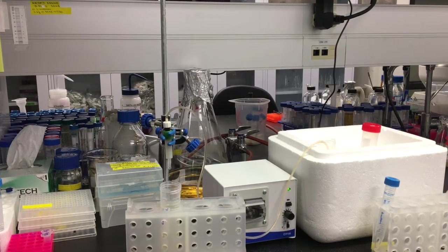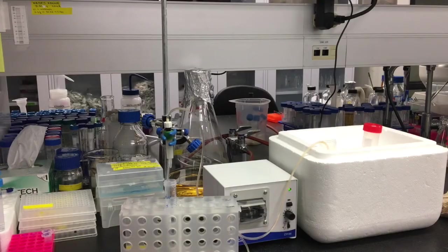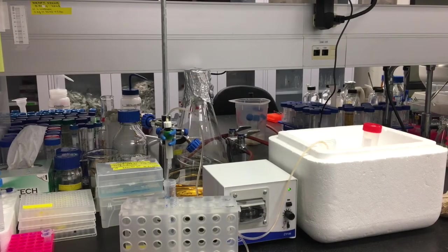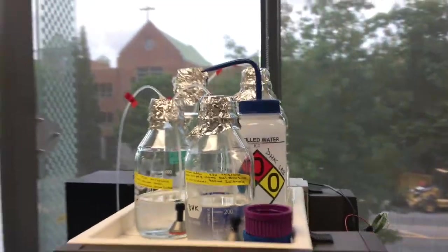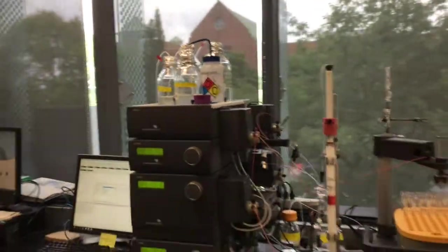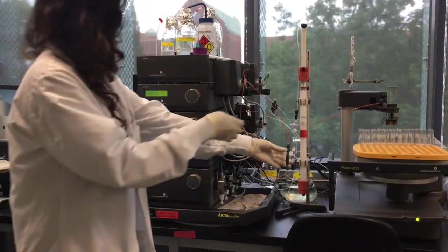After passing the cleared soluble lysate through the column, you can also run a wash with the peristaltic pump. You can then connect the loaded and washed column to an FPLC instrument, which has been primed with both wash buffer and elution buffer.